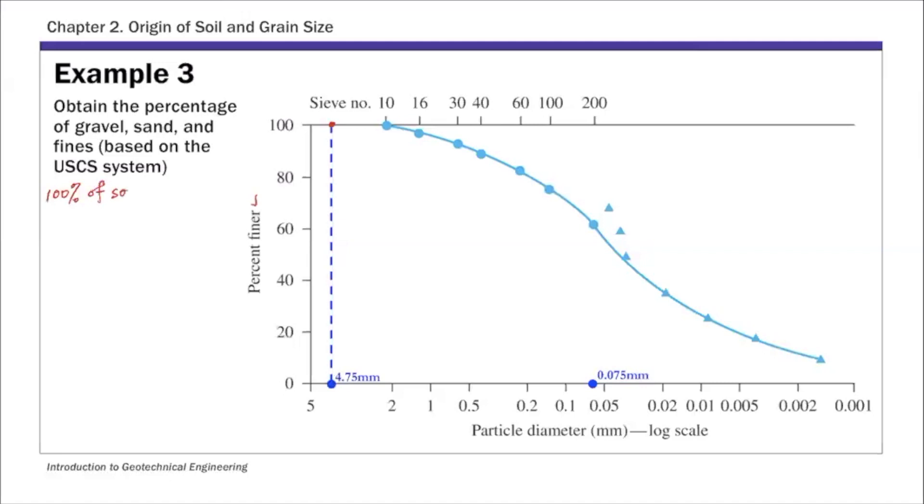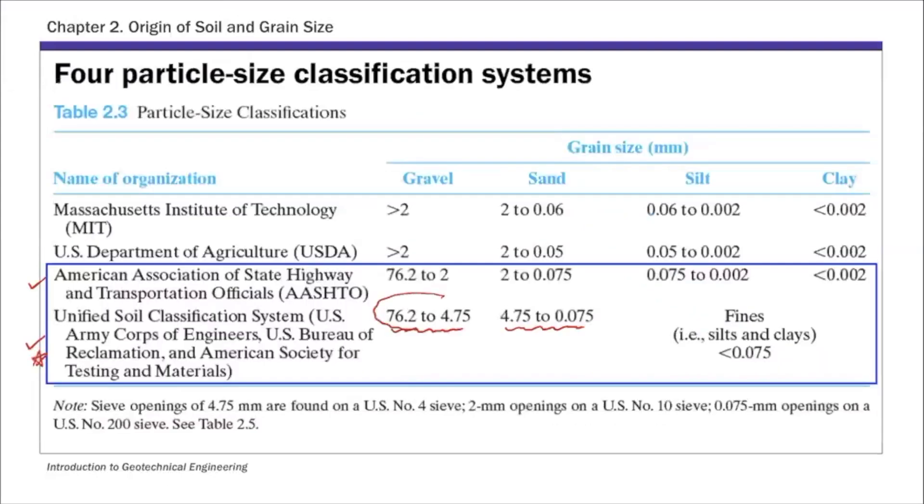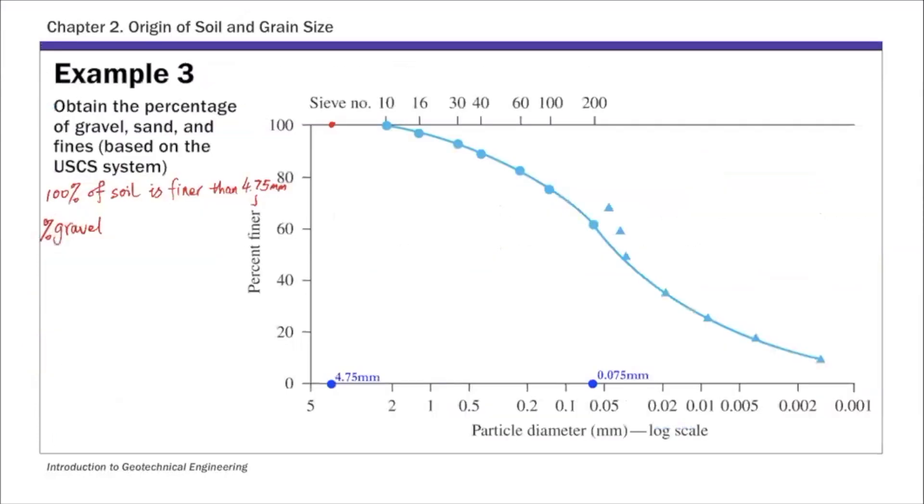For this example here, 4.75. Which means, remember in the USCS system, anything finer than 4.75 is classified as sand. Anything larger than that is classified as gravel, which means the percent of gravel. Gravel is larger than 4.75 and smaller than 76.2. So percent of gravel in this case is 0 percent. We don't have anything larger than 4.75. 100 percent is finer than 4.75.